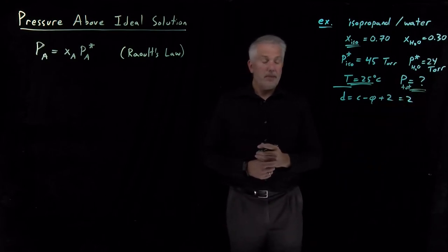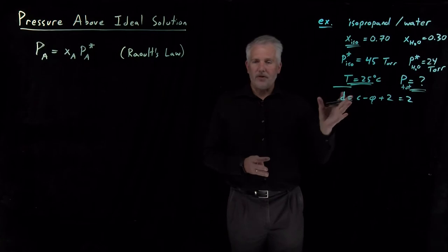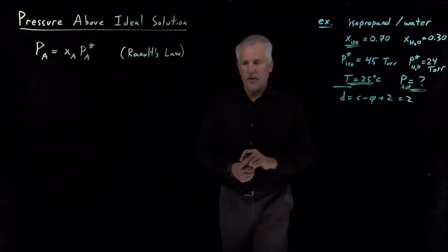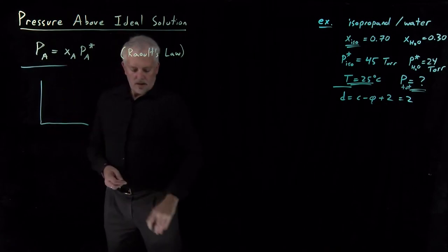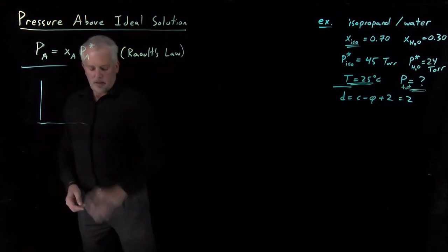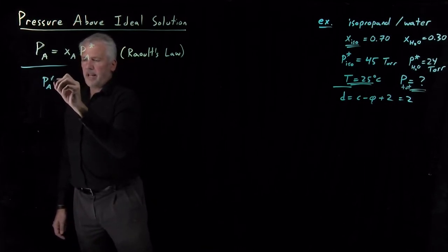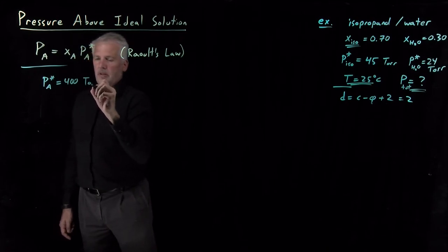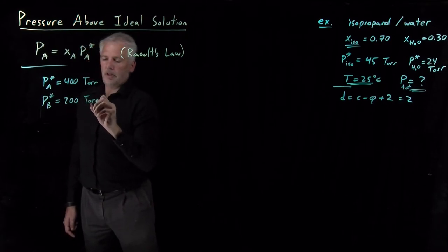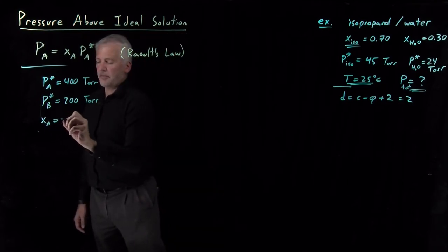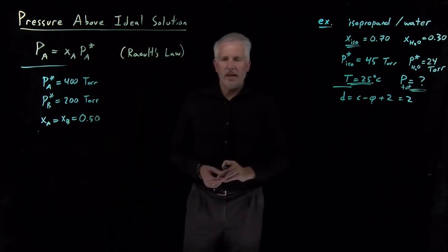The question is: what would the pressure above that solution be? Before we answer that, let me do essentially the same example with rounder numbers so we can focus on the big picture. Let's say solvent A has a vapor pressure of 400 torr, solvent B has a vapor pressure of 200 torr, and I make a solution with mole fraction of A and mole fraction of B both equal to 50% — half A and half B.